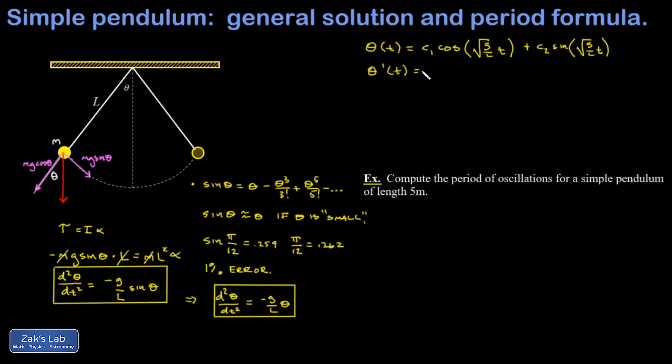I'm trying to show that if I differentiate twice, I get back a negative g over L in front of the original function. So let's differentiate once. And I get negative square root g over L, that's a result of the chain rule. C1 sine root g over L t plus root g over L C2 cosine root g over L t.